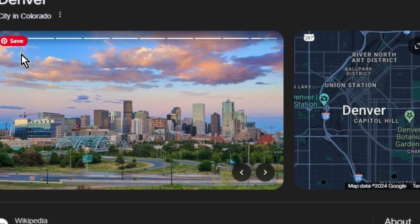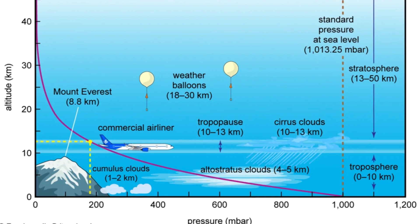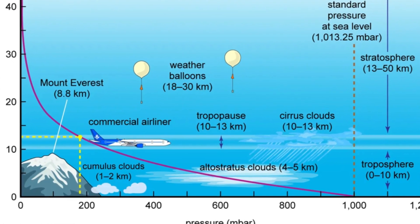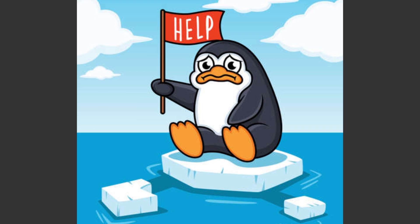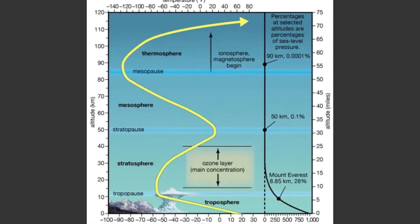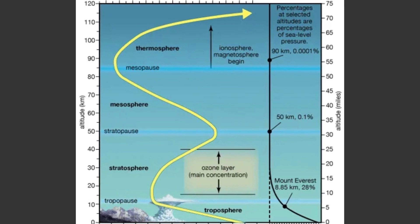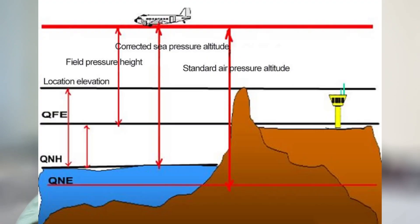Elevation is dependent on the correct measurement of mean sea level, which can change. Global warming will raise the sea level, and every 10 millibar of pressure change will cause the elevation of a place to increase or decrease by 100 meters. That's why every pilot will always enquire about the local atmospheric pressure before landing at any airfield.